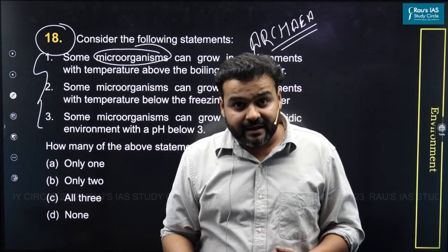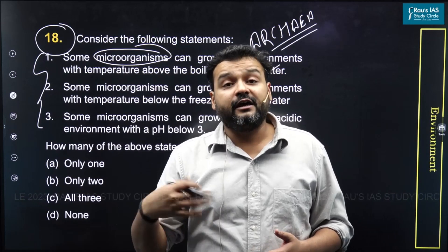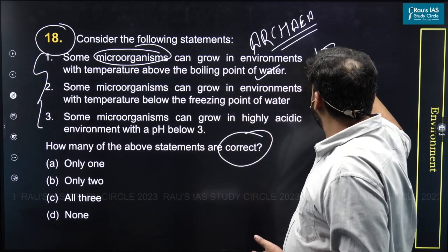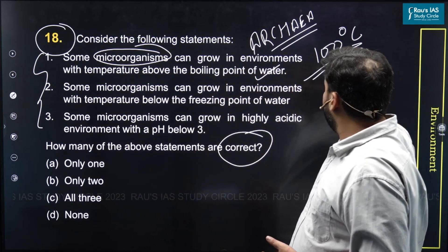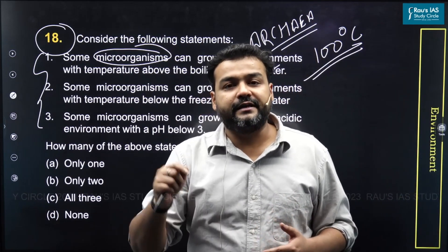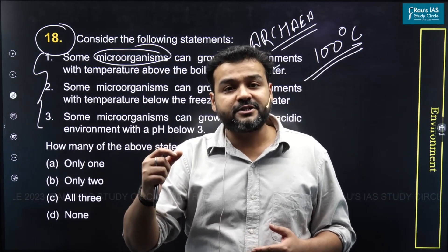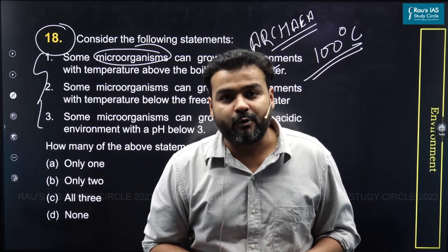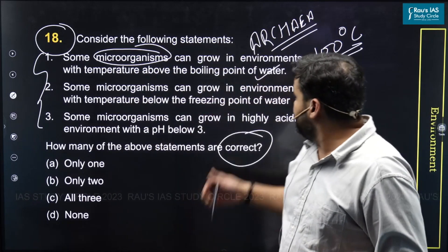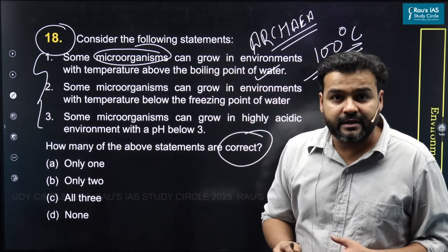There are some bacteria which can survive even above 100 degrees Celsius. Such bacteria are normally found in the deep ocean where high pressure raises the boiling point of the water. With this, statement one is correct.